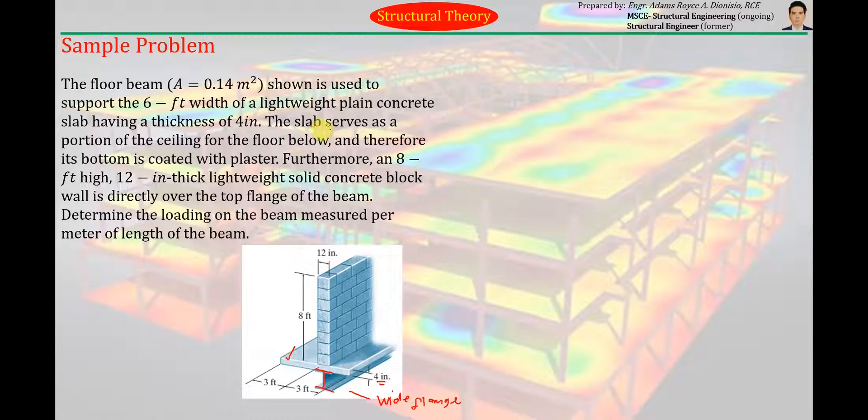The slab serves as a portion of the ceiling or the floor below and therefore its bottom is coated with plaster. So yung floor below, this slab, yung nandito sa ilalim. Yung ceiling nun is actually the bottom of the slab is actually part of the ceiling of the floor below. So ang ginawa, since naka-straight to finish na siya, yung bottom ng slab, nilagyan ng plaster.